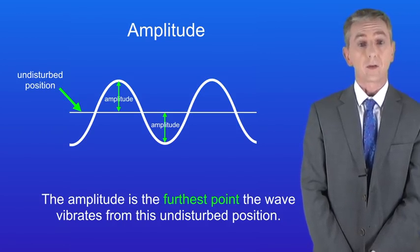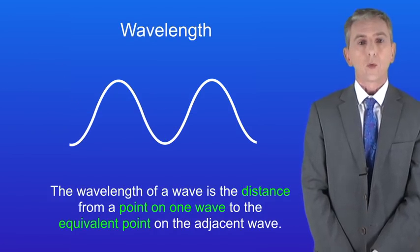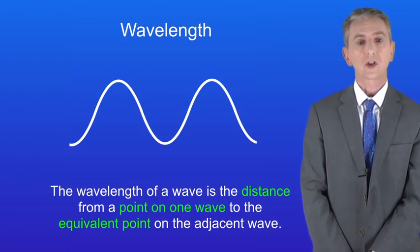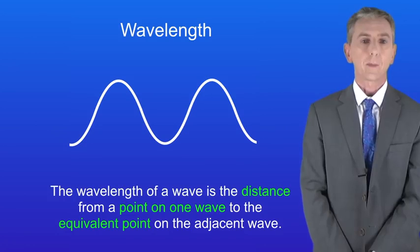Okay the next key feature of waves is the wavelength so we're going to look at that now. Here's the definition. The wavelength of a wave is the distance from a point on one wave to the equivalent point on the adjacent wave. So what does that mean?